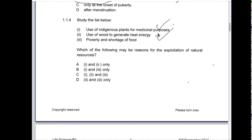If I take plants out of nature for medicinal purposes we can exploit nature. Use of wood to generate energy, yes those trees were growing and now I'm cutting them off to burn. Poverty and shortage of food, so if I go into nature and get food and I don't do it wisely and I use everything because I was poor, then that would cause the exploitation of nature. So the correct answer is 1, 2 and 3, which is C.